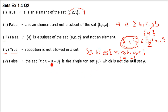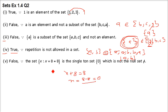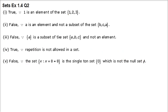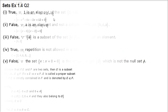Next: the set {x : x + 8 = 8} is the null set. Solving: x + 8 = 8 gives x = 0. So there is an element 0 in this set — it is not a null set. It has an element called 0. That is false.